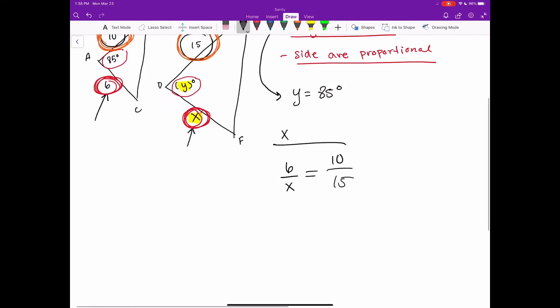Now we just have to solve for x and we talked about cross multiplying a little bit ago. So if I cross multiply these numbers, I'm going to get 10 times x equals 6 times 15. And then I can just solve for x. This is going to be 10x equals 90, divide by 10 on both sides, you're going to get that x equals 9.